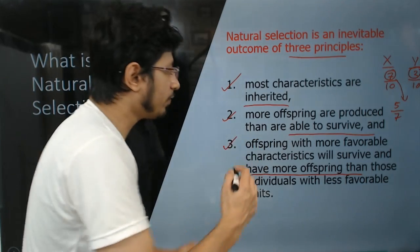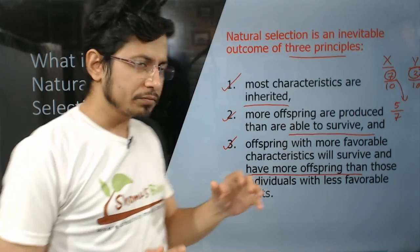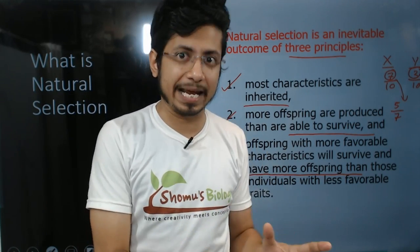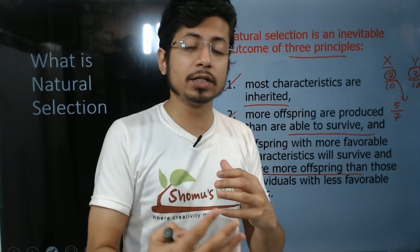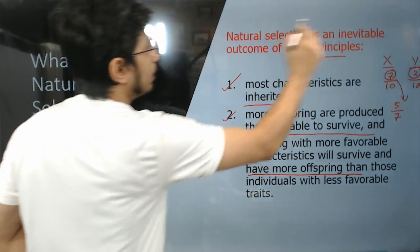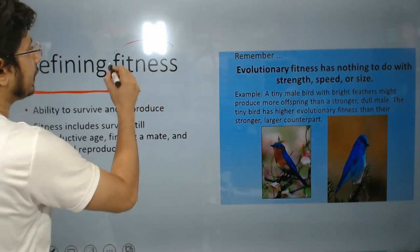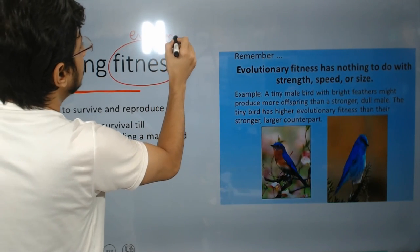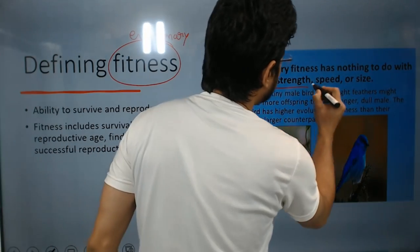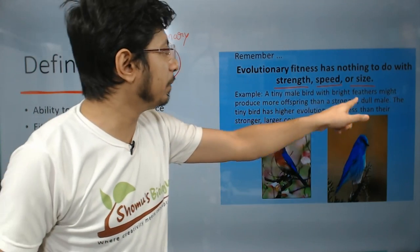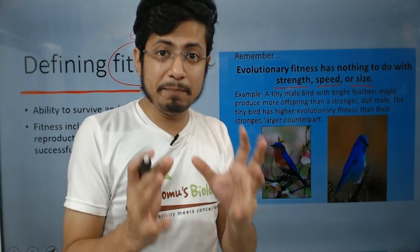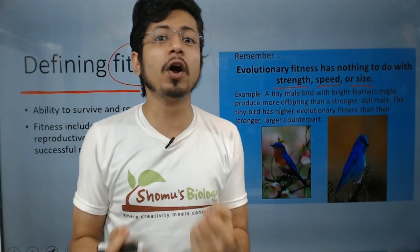An organism is going to produce enough offspring — among those, some will survive, some will die. Depending on the percentage of offspring that can survive, we mark those as fitness or evolutionary fitness. Fitness here means evolutionary fitness — we are not talking about fitness in the general English dictionary sense. Evolutionary fitness has nothing to do with the strength, speed, or size of an organism. For example, a tiny male bird with bright feathers might produce more offspring than a stronger dull male.